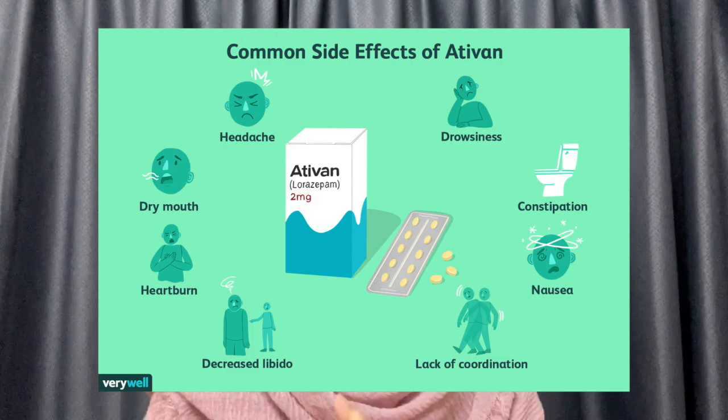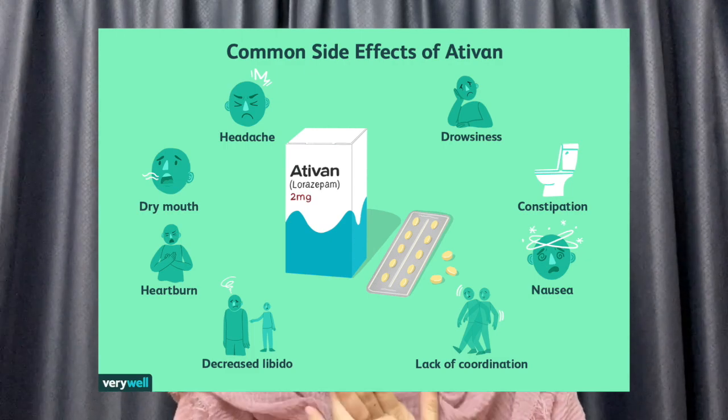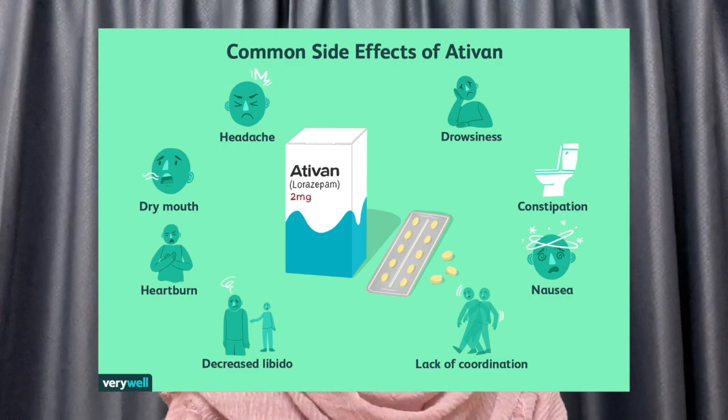Lorazepam also has adverse effects — meaning the unwanted or side effects that come along with the intended effects. The benefits we want from this drug are to treat anxiety and insomnia, but at the same time there are unwanted effects that come along with it. For example, effects can include drowsiness, nausea, constipation, change in appetite, and change in sexual interest, among others.